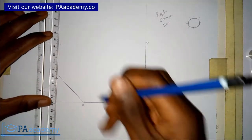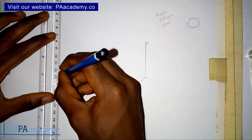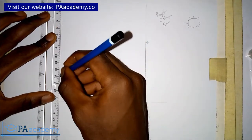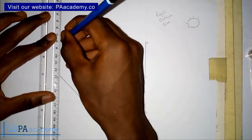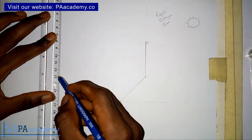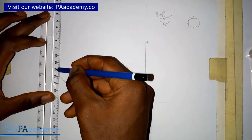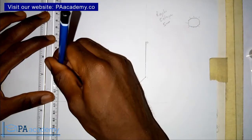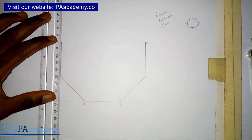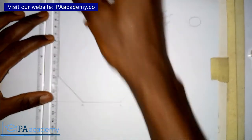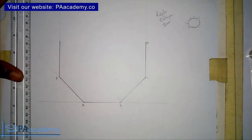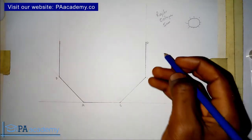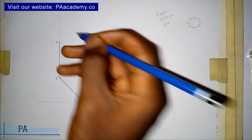We are going to repeat the same thing from point D. To the point where we marked our 45 degrees, measure 5 cm from point D: 1, 2, 3, 4, 5. Make it bold and extend it with a faint line. Let me call this point F.